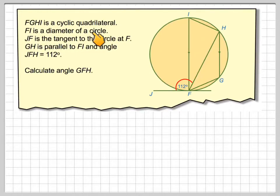FGHI is a cyclic quadrilateral. All the vertices touch the edge of the circle. FI, this one here, is the diameter. That's quite important for this question. And JF is a tangent to the circle at F.